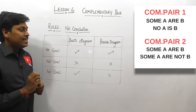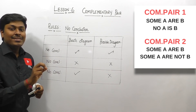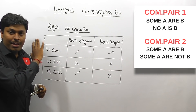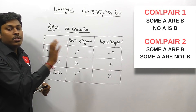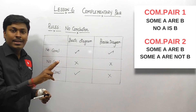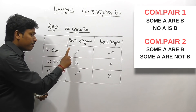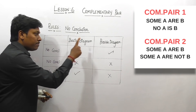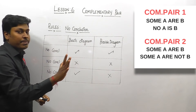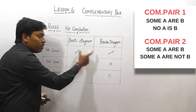When we find a complementary pair in the conclusions, I always target the second conclusion — the 'No A is B' conclusion. We already learned in lesson number two about 'No' conclusions. If the 'No' conclusion is true in the basic diagram and also true in the possible diagram, then it does not satisfy the complementary pair rule, and you should not say 'either or'.